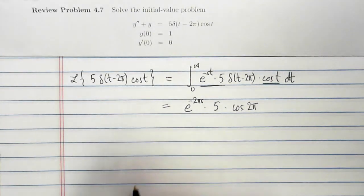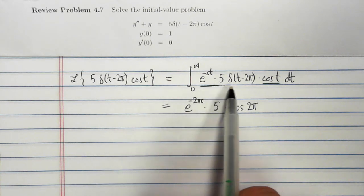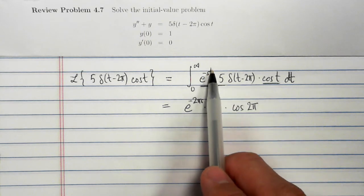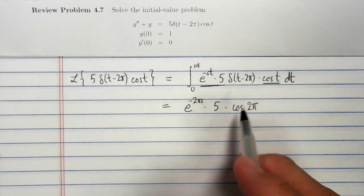And so that's just the way that we find the integral of a function that has a delta function inside of it. If I have delta of t minus 2 pi, I plug in 2 pi everywhere where I see t and that's the value of the integral.